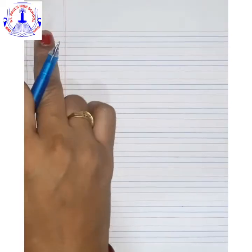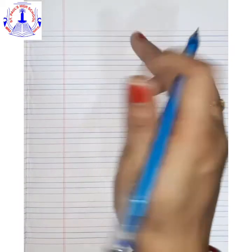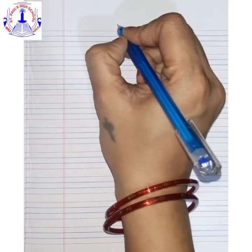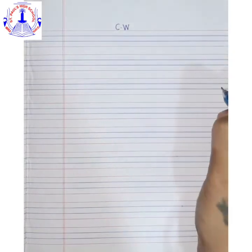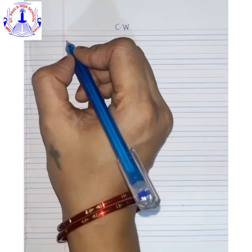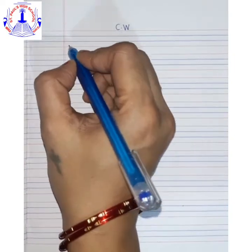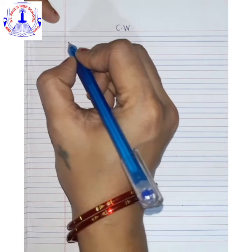Now we will see how we are going to write cursive letter A. So let's start. Write today's date and C dot W. Cursive letter A we have to write in between blue line to blue line.